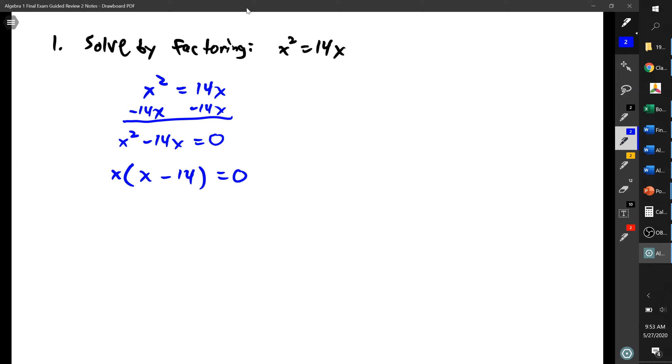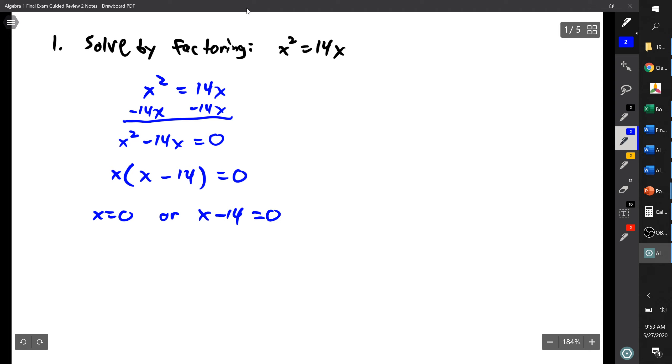So I can set each factor equal to zero. So that gives me x equals zero, that's that one. Or x minus 14 equals zero. This one is already solved for x, so then this one becomes x equals positive 14, because I added 14 to both sides. And there we go, I solved it.